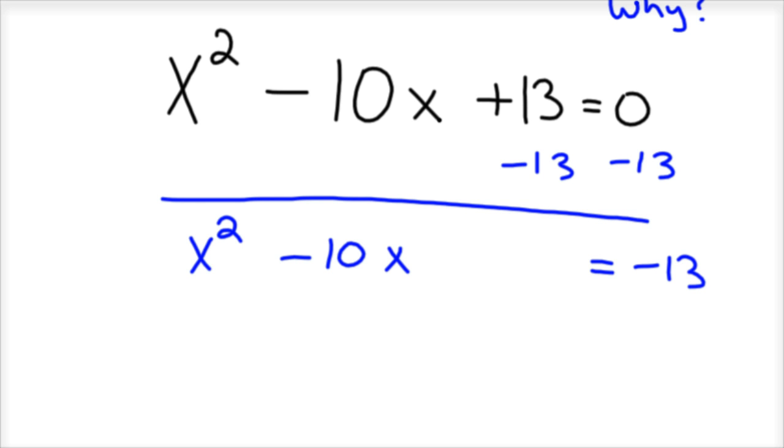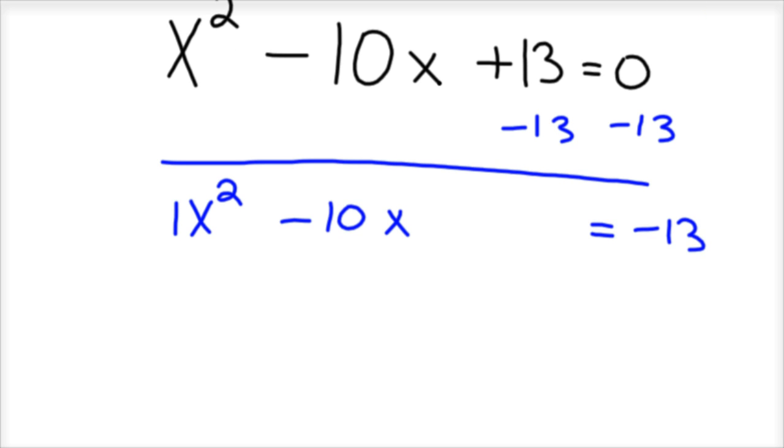Your next step, because there's a 1 in front of the x squared, that's a good thing. That means we can complete the square. We're going to take that 1 out of there. You don't need it. But since it's a 1, now we can divide your middle term by 2 and square it.